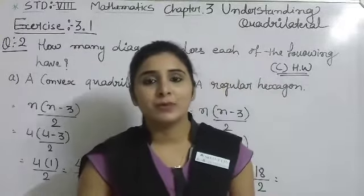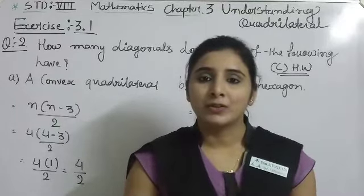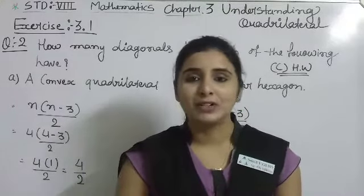Seven-sided polygon is heptagon, eight-sided polygon is octagon, nine-sided polygon is nonagon, and ten-sided polygon is decagon.